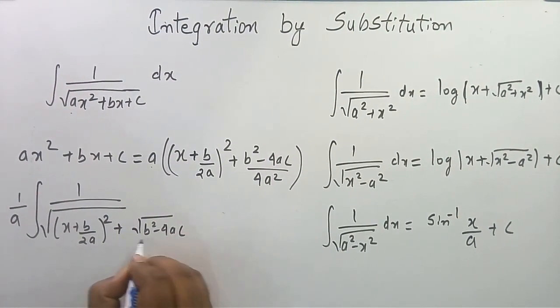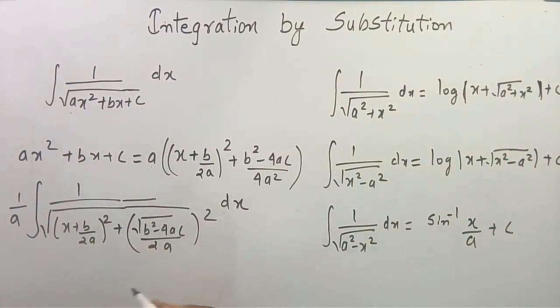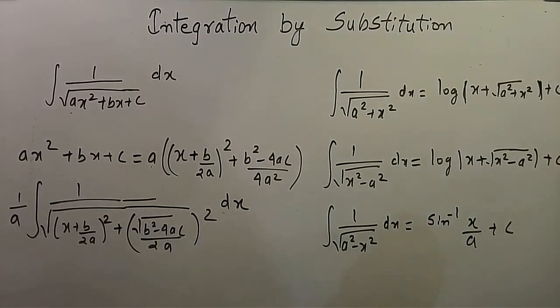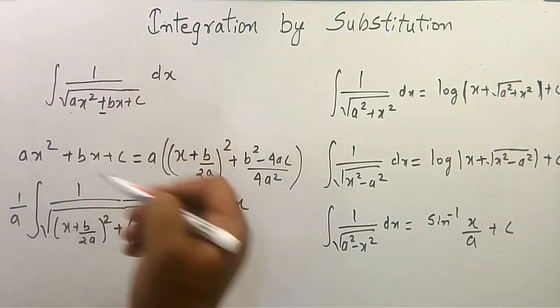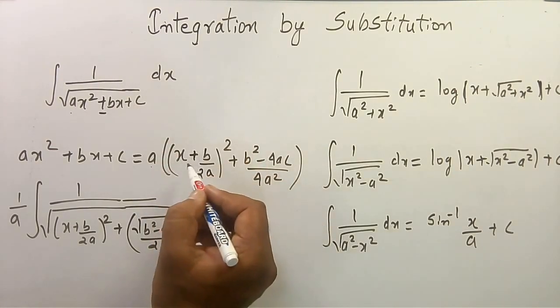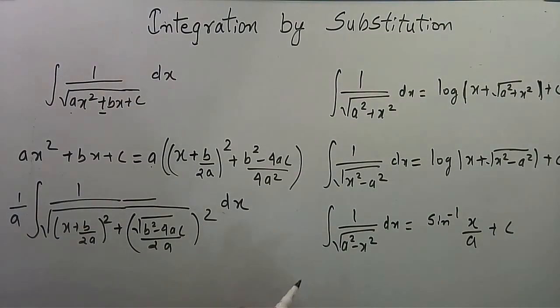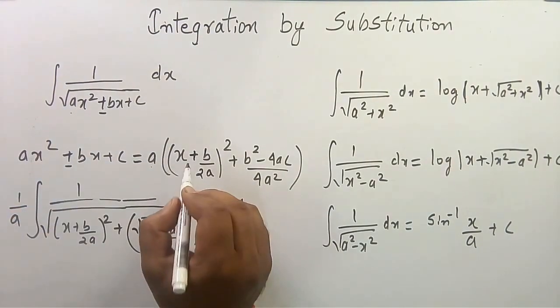Now we can, based on this plus and minus, use either of the three formulas. If there is a minus sign, then there can be minus here or here also. So there can be here also minus.